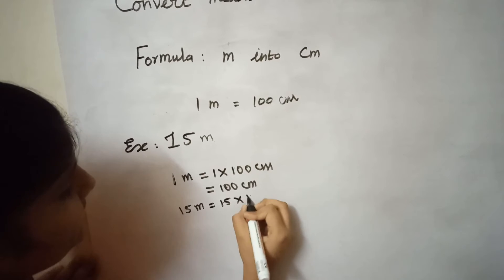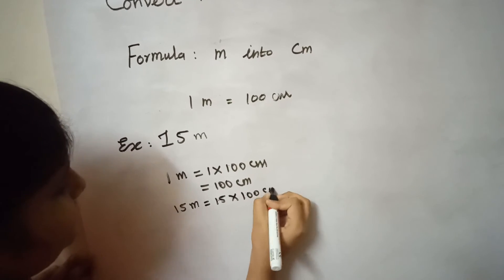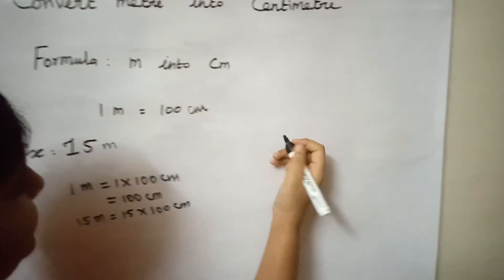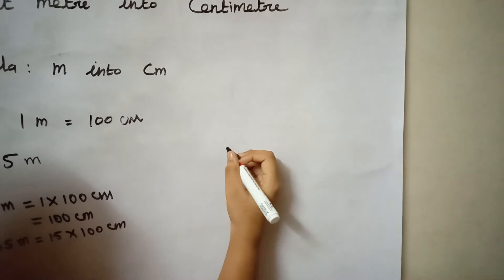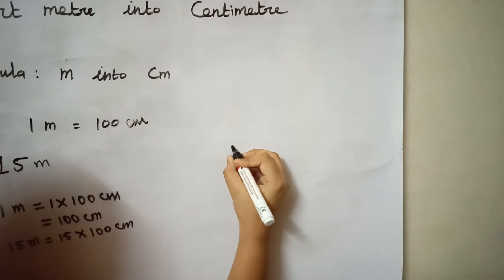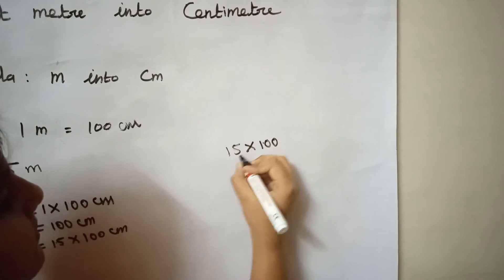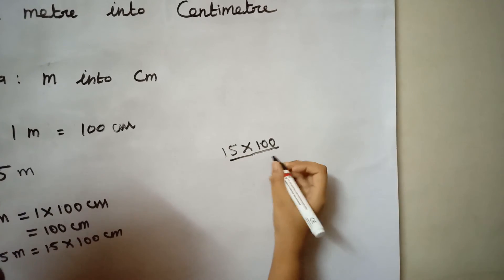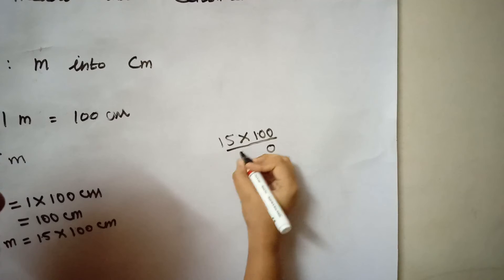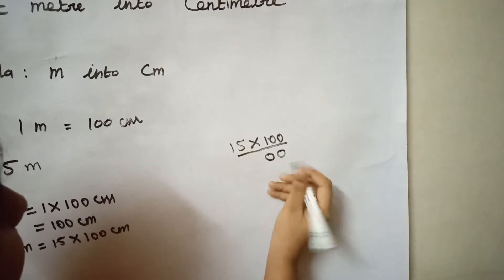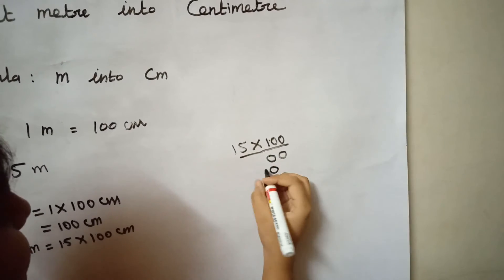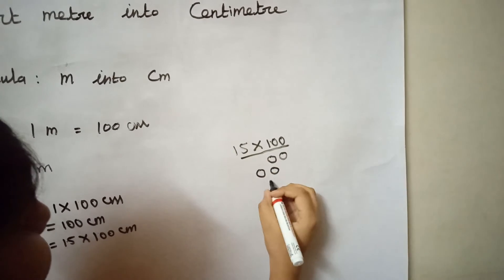Let us do here the calculation for 50 into 100 centimeters. 0, 5s are 0, 0, 1s are 0, 0, 5s are again 0, 0, 1s are 0, 1, 5s are 5, 1, 1s are 1.